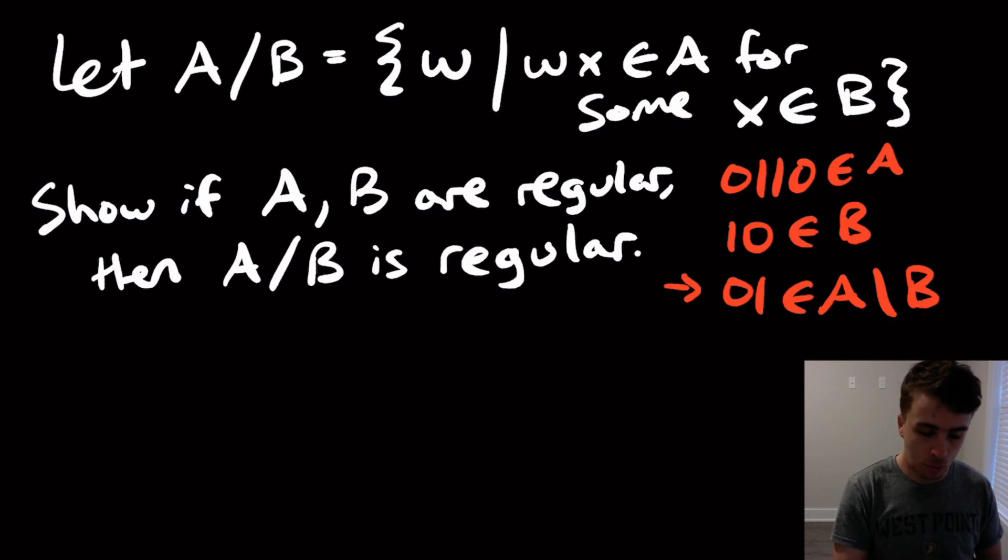So what we're trying to do here is if we have these two languages being regular, meaning that there's a DFA for them, then we can make a DFA for A divided by B. So pause the video and try to think about how you would actually solve this. Okay, so how would you actually solve this?